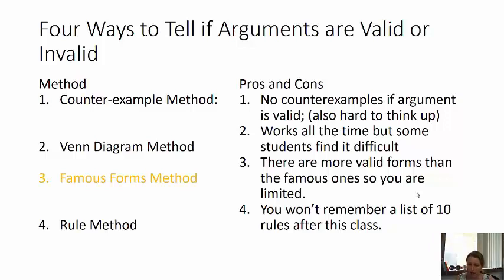The counter example method works like this: if the argument is invalid, you can come up with a counter example — a way the premises could be true and the conclusion is false. That would show the argument is invalid.